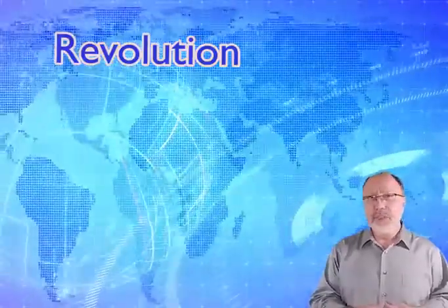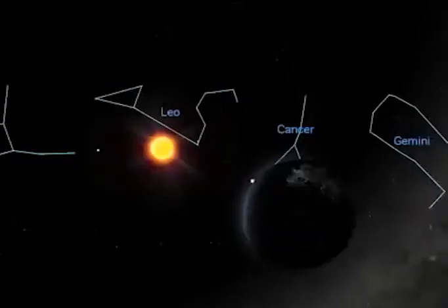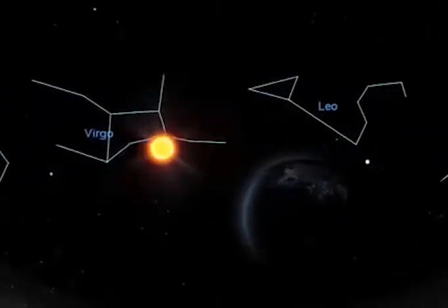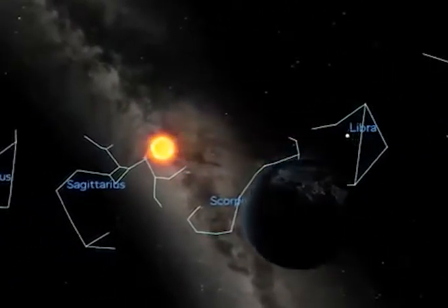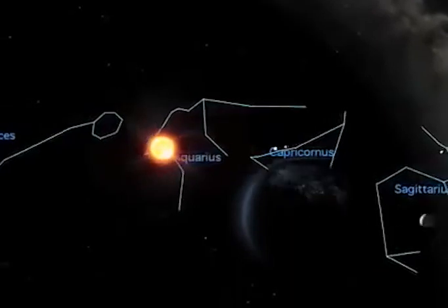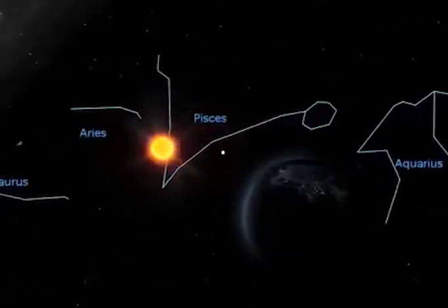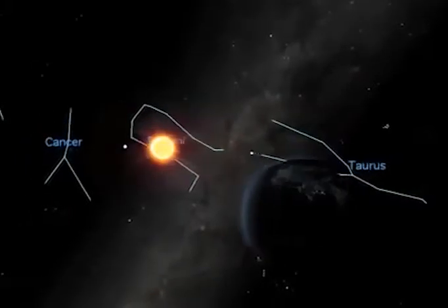Revolution — so far we have discussed the importance of Earth's rotation on its axis, but what about Earth's movement around the Sun? We refer to this motion as Earth's revolution around the Sun. The Earth takes 365.242 days to travel around the Sun — almost a quarter of a day longer than the calendar year of 365 days. Every four years, this time adds up to nearly one extra day, which we account for by inserting a 29th day in February in leap years. Further minor corrections, such as omitting the extra day in century years, are necessary to keep the calendar on track.